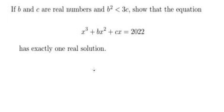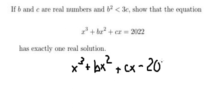I will show you how to answer. Now we have this equation. I will put 2022 on the left, and we have x to the power of 3 plus bx squared plus cx minus 2022 equals to zero.